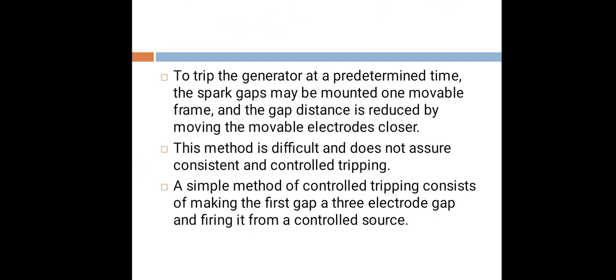To trip the generator at a predetermined time, the spark gaps may be mounted on a movable frame, and the gap distance is reduced by moving the movable electrode closer. This method is difficult and does not assure consistent and controlled tripping.